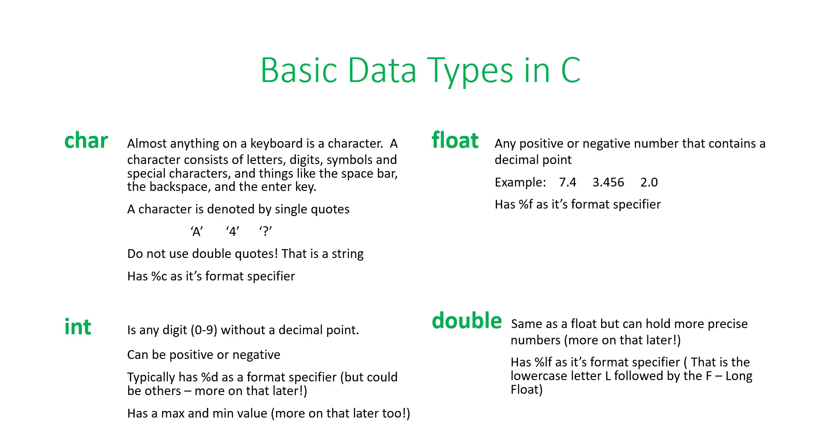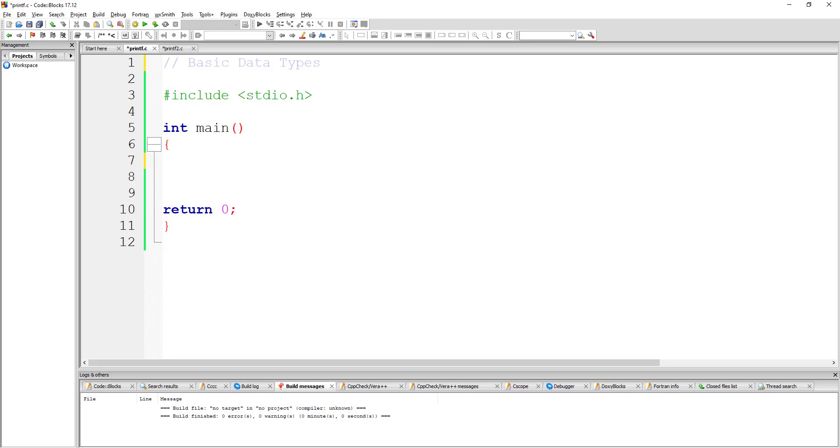So, let's go declare each of these and take a look at how they work. So, if I create a variable, and I call it initial, and I want to use my initial, notice I put it in single quotes. Just think, single character, single quote.